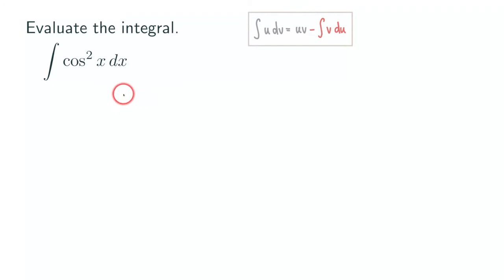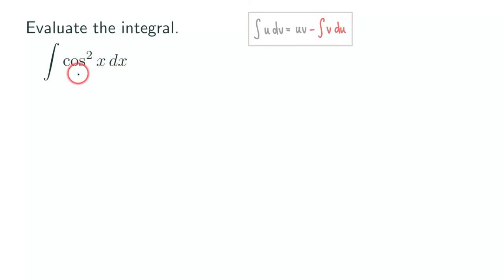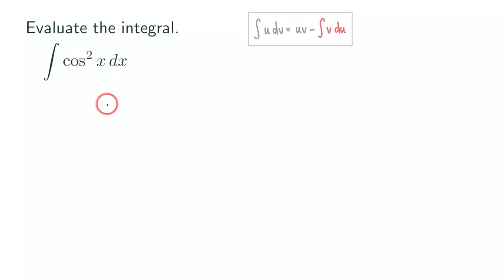This time we are going to do it differently — we are going to use integration by parts. In order to use integration by parts, we first need to write it as a product. We also need to call this integral or give it a name. We can call this integral b, or b of x.